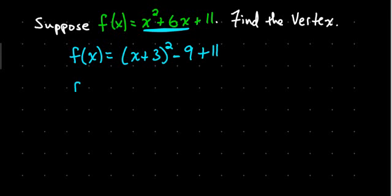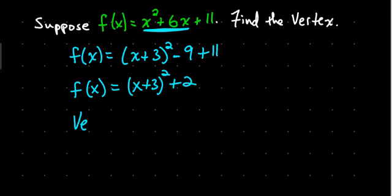Plus 11. So, this is f of x equals x plus 3 squared plus 2. And so, my vertex is going to be at negative 3 and 2. And from our transformation of functions, that's where we get that.